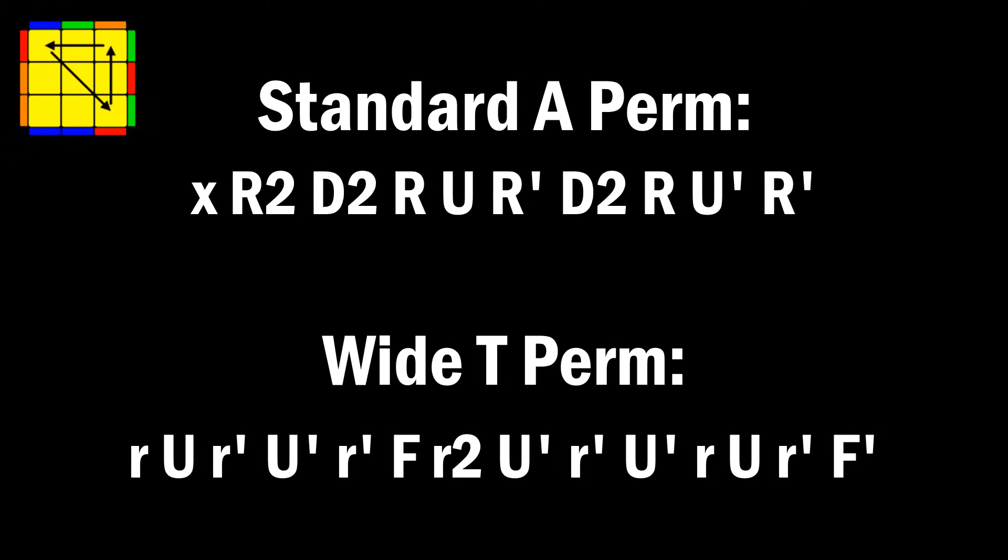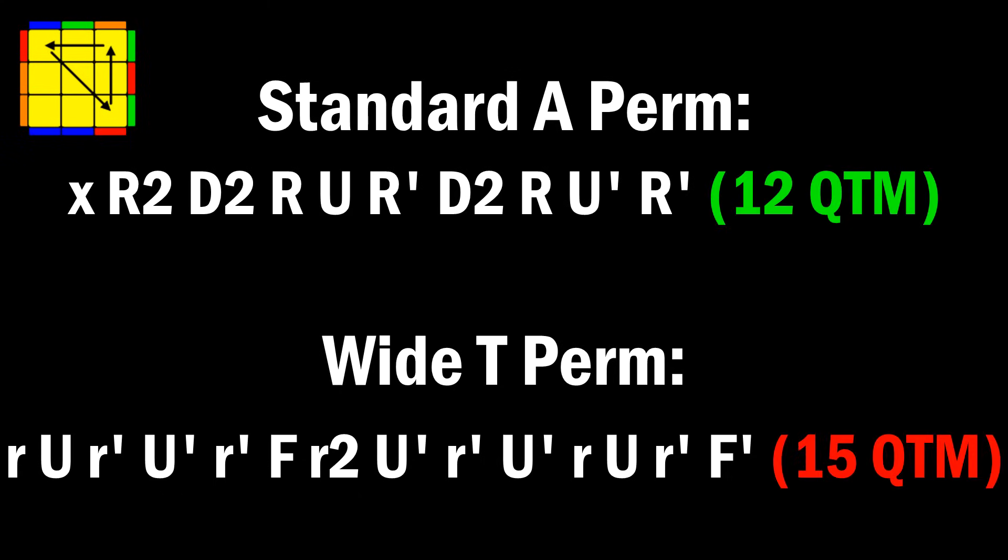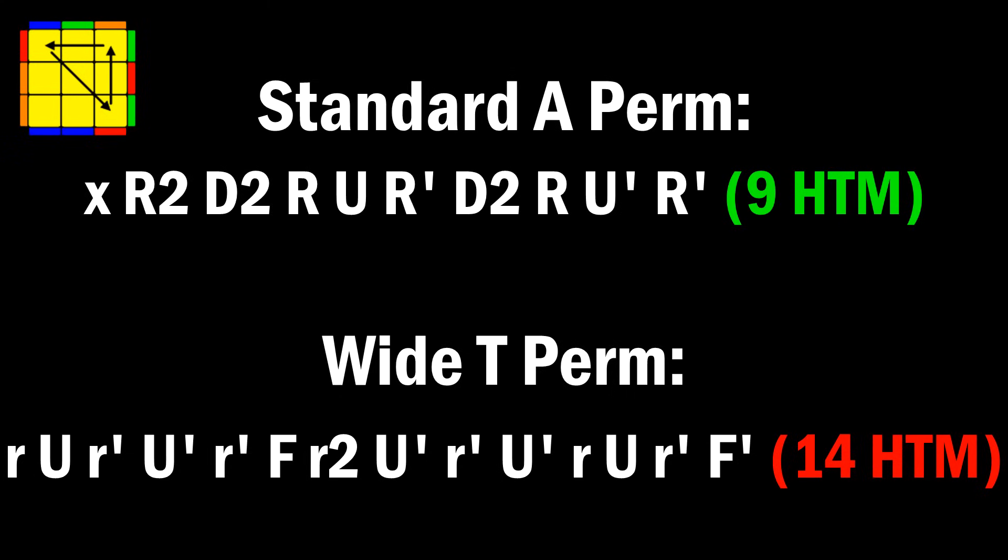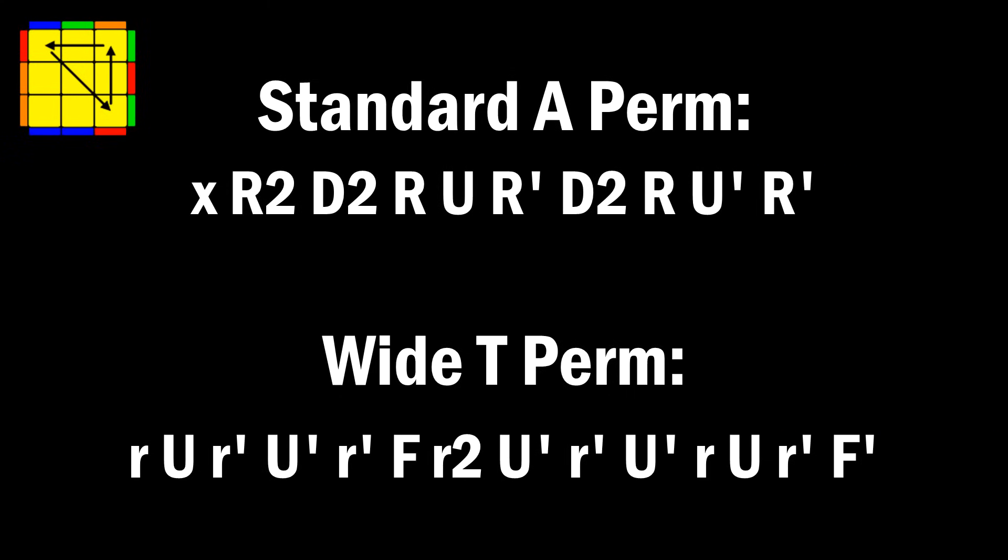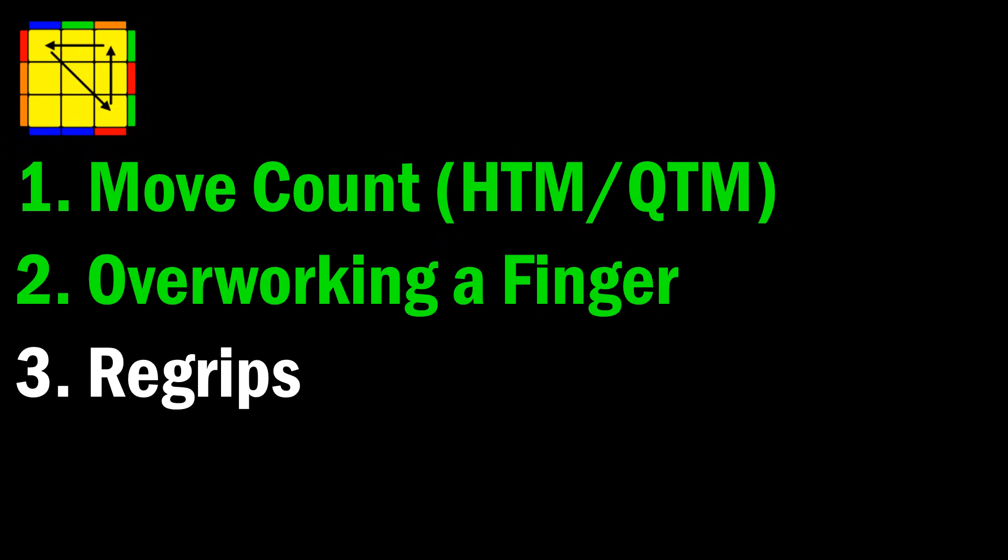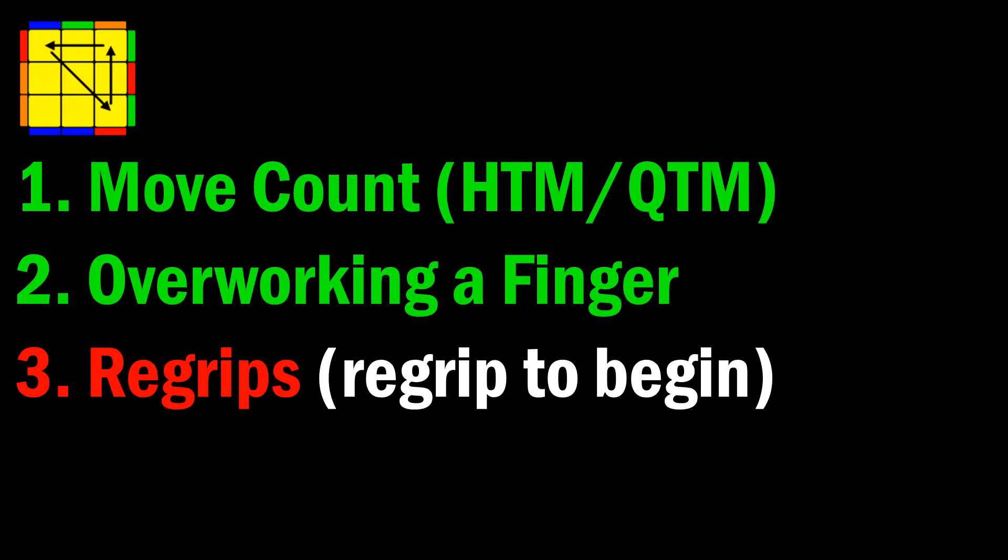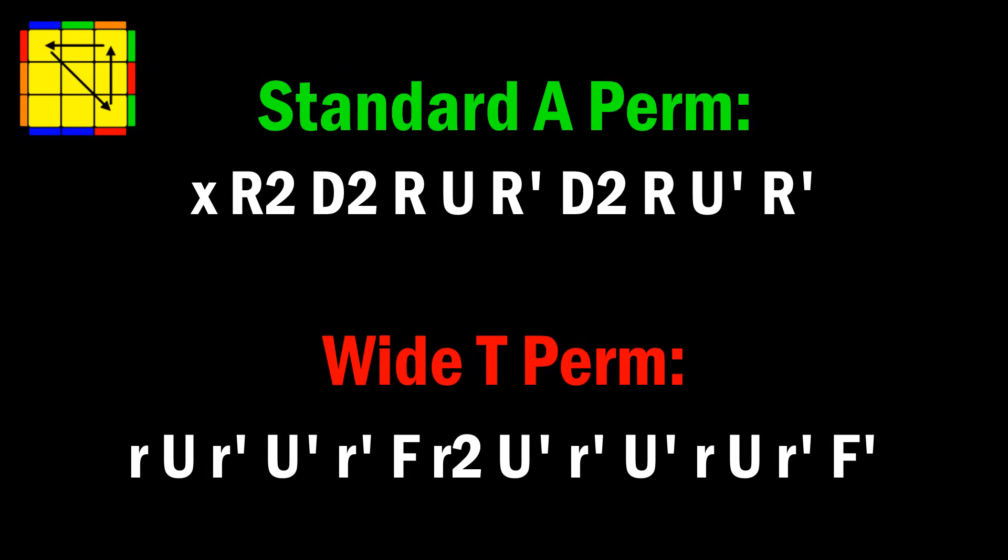Before I get to the formula, let's use all the concepts in this video to fully analyze the A-perm versus wide T-perm, and have a conclusive decision on which one is better. In quarter turns, the regular A-perm is 12 moves, and the wide T-perm is 15 moves. And in half turns, it's 9 versus 14, so the regular A-perm still wins here. Now for overworking a finger, the A-perm never does this, but the T-perm does this one time. And lastly for re-grips, the A-perm does begin with a re-grip, while the T-perm does not. So the regular A-perm wins in every department except for that one initial re-grip, which is not as bad as most hard re-grips, so I would say that the A-perm definitely wins over the wide T-perm.